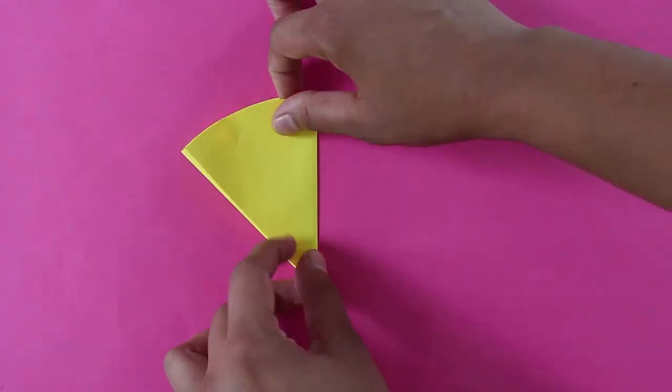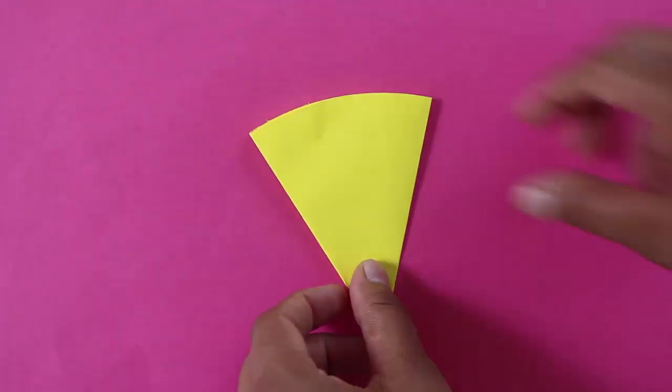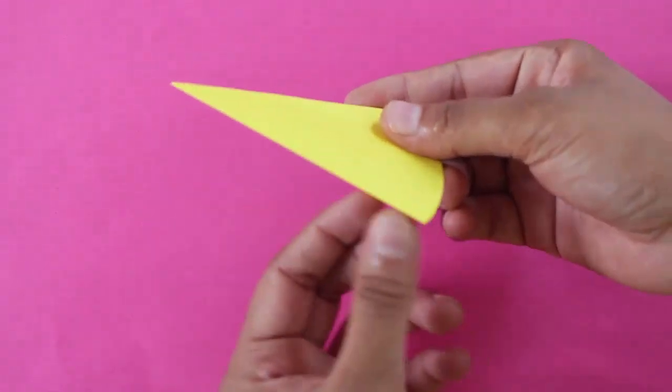Later fold the model upon itself on its midline into half. The paper will now be one-eighth of its original size.